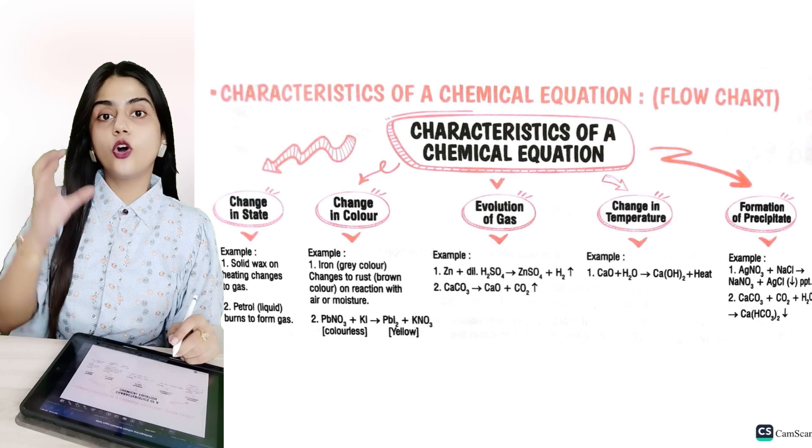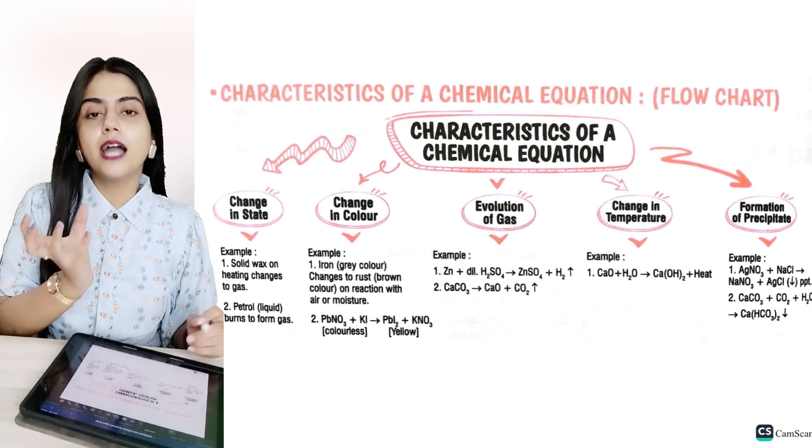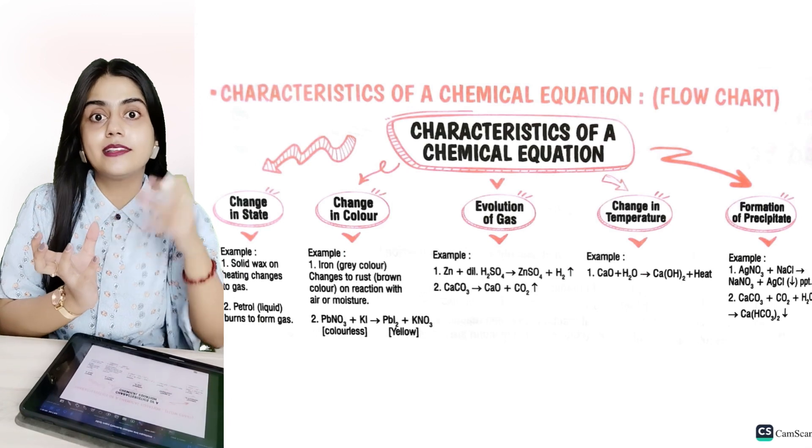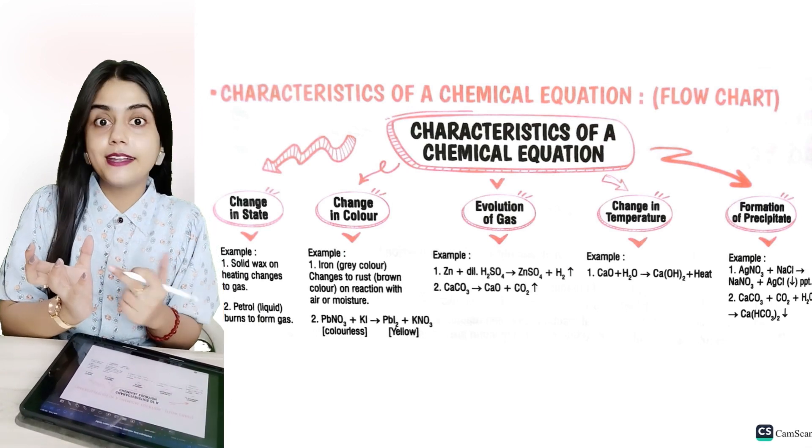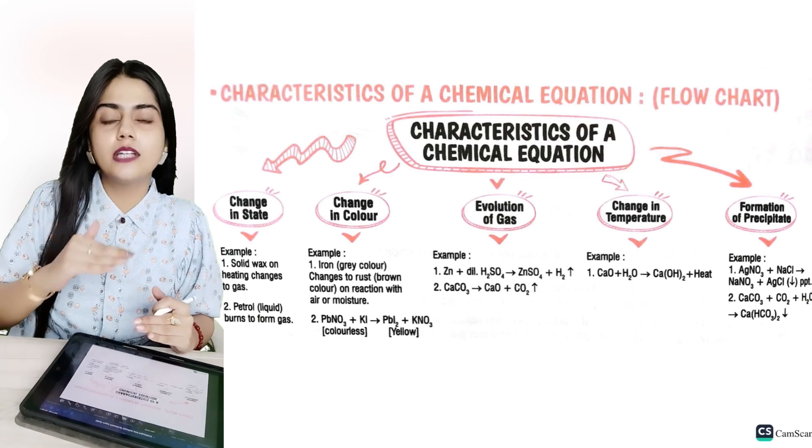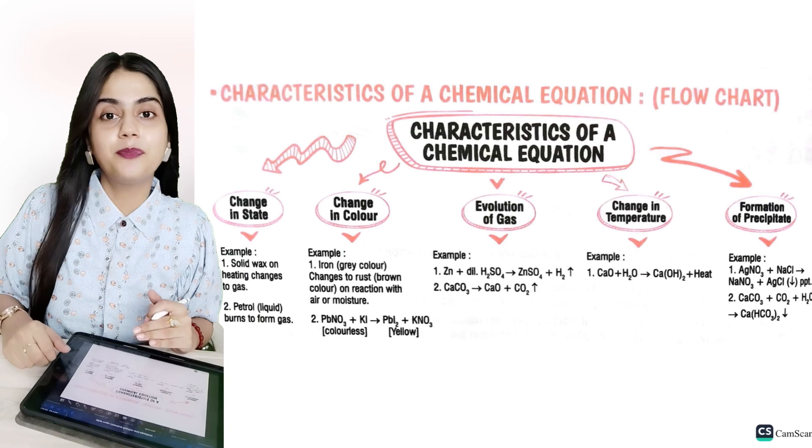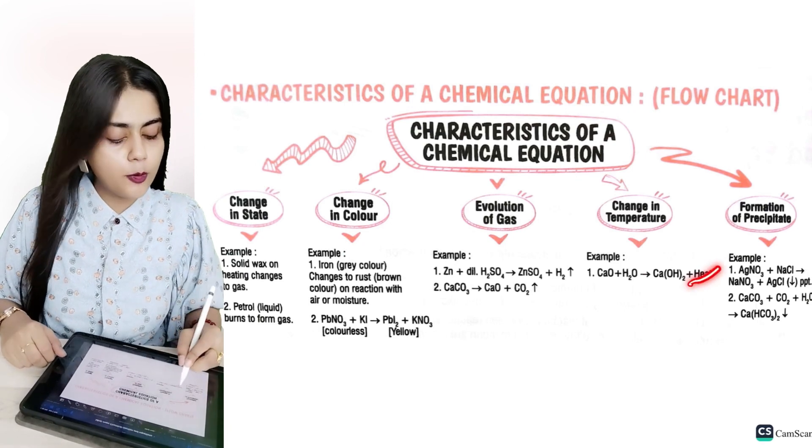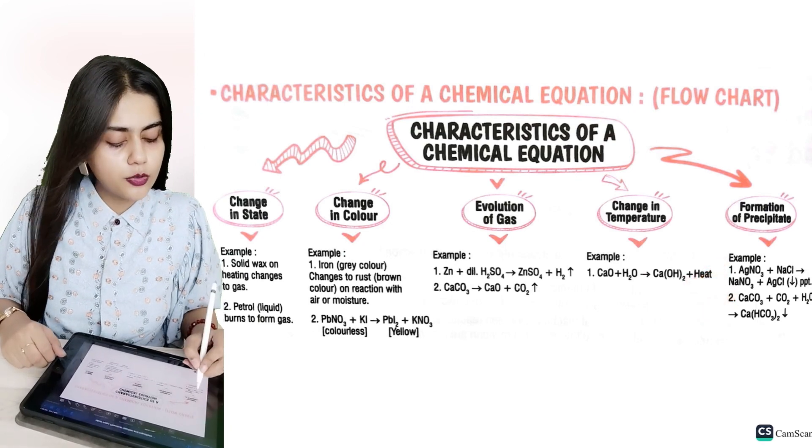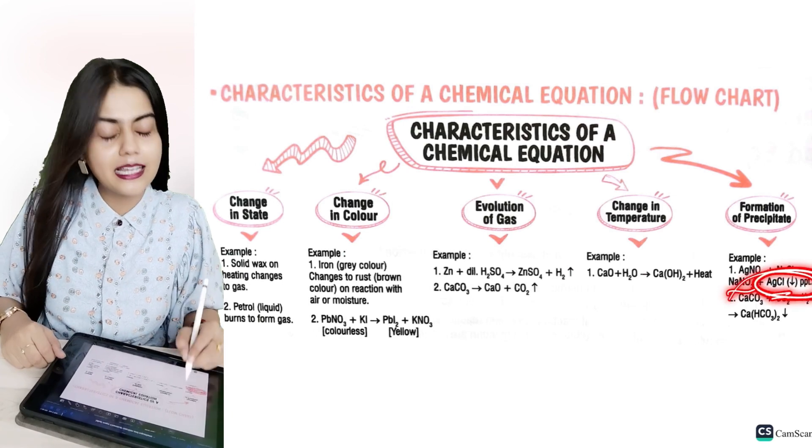5th Formation of Precipitate. What is precipitate? Insoluble liquid is precipitate. If I took water, if I put water in the sand, it is not soluble. It will settle down. Whatever is settled in the water, it becomes precipitate or PPT. You can see two examples. You can see AgNO3 plus NaCl, it gives NaNO3 plus AgCl. So what we get from here is PPT.